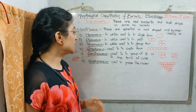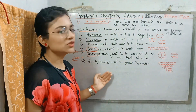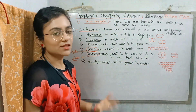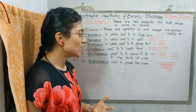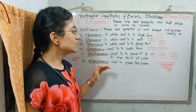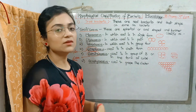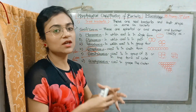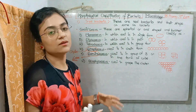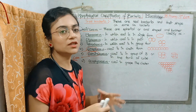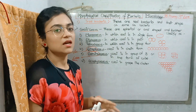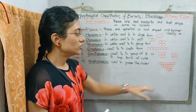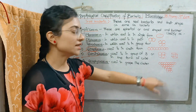Next is Sarcina, where cocci are arranged in a cube structure. After that is Staphylococcus, where the cocci are in the form of a grape cluster in an irregular form, arranged like grapes.